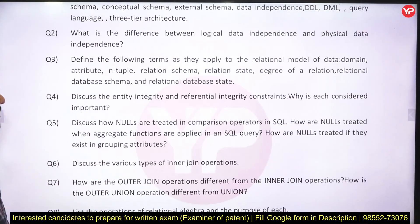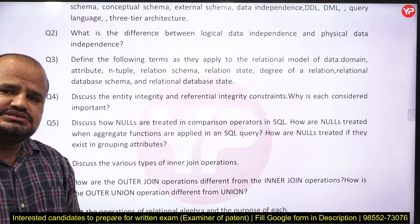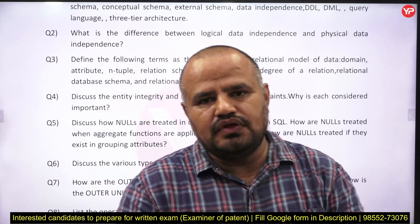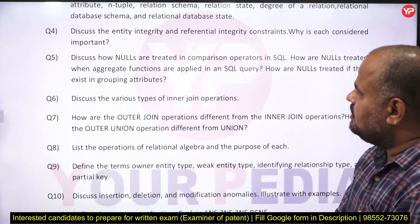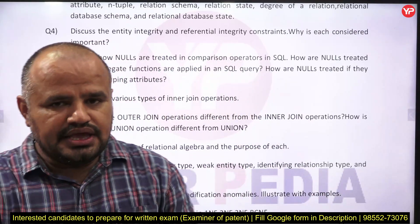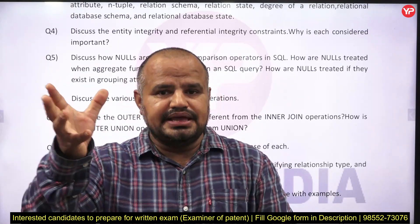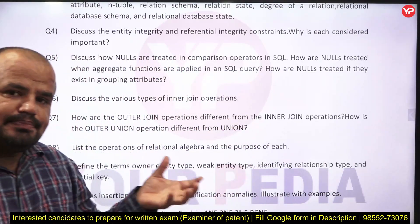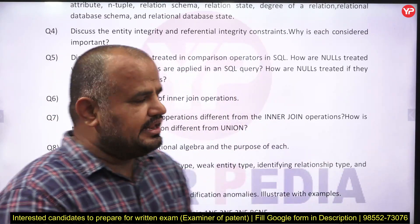The next important problem is from integrity constraints. We have different types of integrity constraints: key constraints, domain constraints, referential integrity constraints, and entity constraints. You must be aware of all these types of integrity constraints. Next, a very important question is to discuss how NULLs are treated in comparisons in SQL. Here SQL comes into the picture — he may ask questions by giving a query or with a particular clause, such as IN, IS, IS NOT, EXISTS, and aggregate operations.